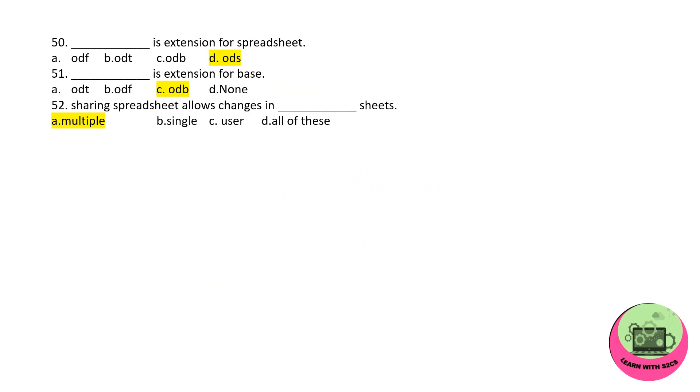Moving to the last part. Dash is the extension - extensions are also very important from the exam point of view. For spreadsheet it will be ODS, for Base it will be ODB. I hope these 52 MCQs might have helped you as a part of revision for your exams. All the best for your exams. If you like this video, you can comment down. I will be posting more MCQs related to this subject and the upcoming Computer Science subject also. I will meet you in my next video. Till then, bye.